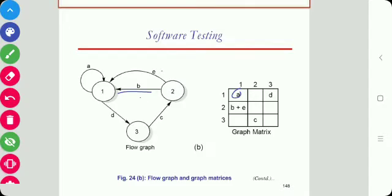From two to one, it is B plus E, meaning there are two arrows. From one to three there is D, and from three to two there is C. This is the graph matrix.